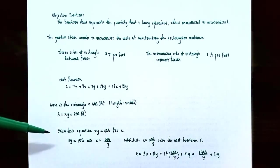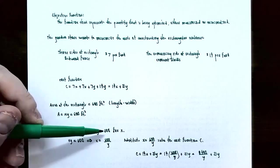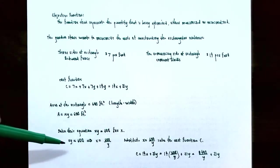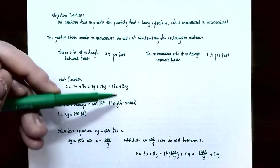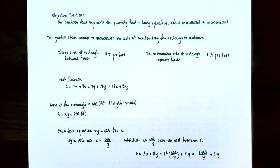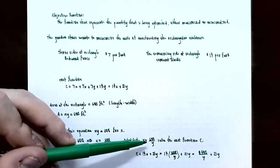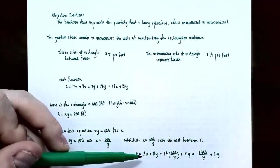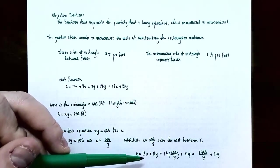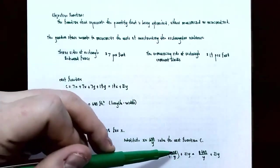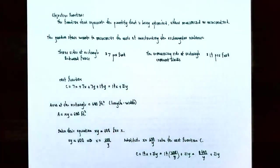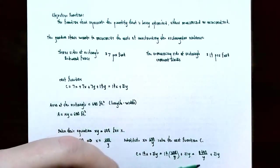Now use the substitution method from algebra. Plug x = 600/y into the cost function C = 14x + 21y. Replacing x gives C = 14(600/y) + 21y. Simplifying: 14 times 600 is 8,400, so C = 8,400/y + 21y. This is the function we want to minimize, and it now has only one variable: y.